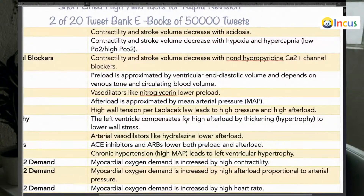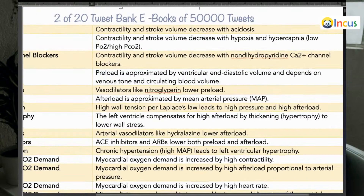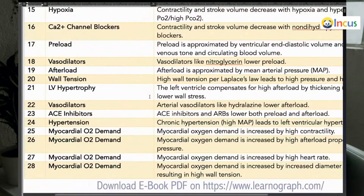What is preload? Preload is how much blood is coming to the heart. It depends on venous tone and circulating blood volume. At the end of diastole, the volume of blood in the ventricle decides the preload — preload is determined by ventricular end-diastolic volume. Vasodilators like nitroglycerin decrease the preload.